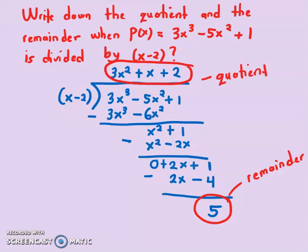This is called the remainder, and this part here is what you call the quotient. So you can also use long division to find the value for P(x) when x equals to 2.